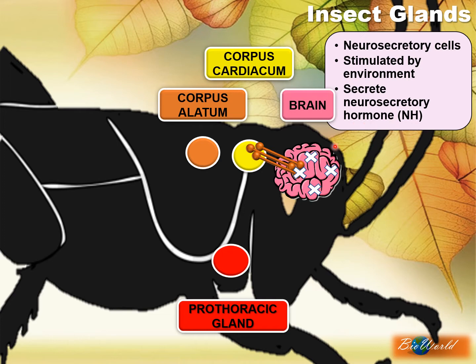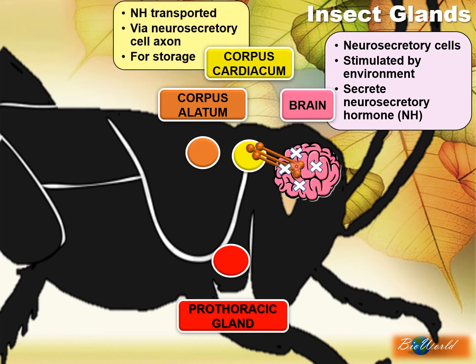NH is not stored in the brain. Instead, NH will be transported by the axons of the neurosecretory cell to the corpus cardiacum. So the corpus cardiacum will store NH and release NH when it is necessary. Please remember, corpus cardiacum does not secrete NH.